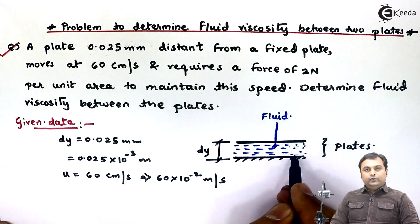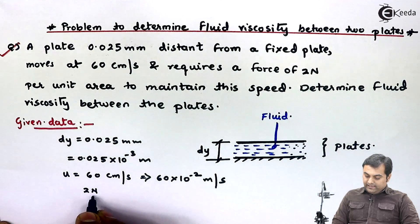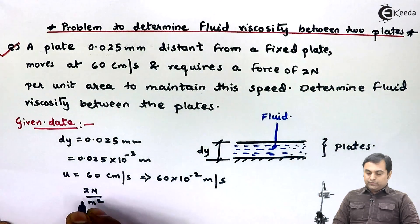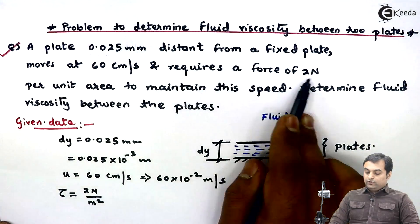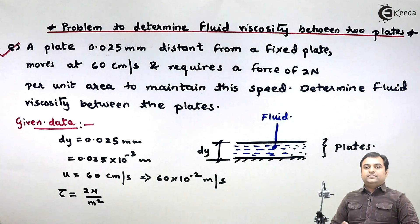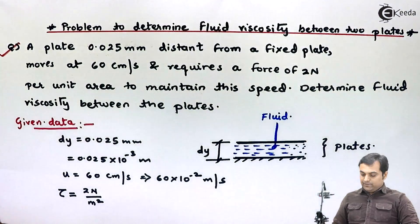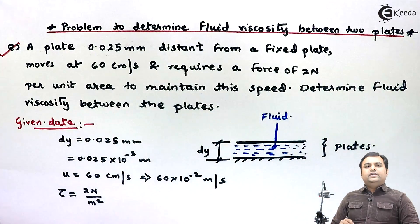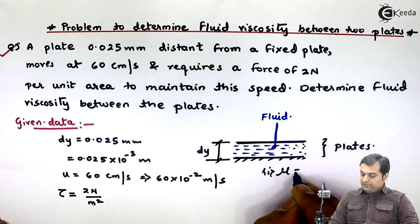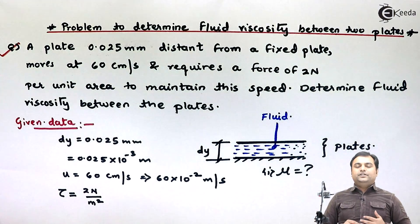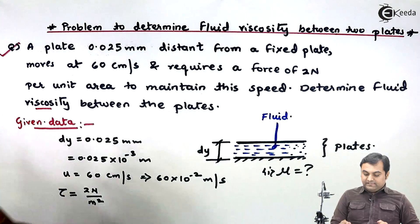It requires a force of 2 Newton per unit area to maintain this speed. Force per unit area is stress, and here it is shear stress because the flowing fluid has layers that are going to shear. Since only viscosity is asked, it means we have to calculate dynamic viscosity mu — if kinematic viscosity were needed, it would be explicitly mentioned.